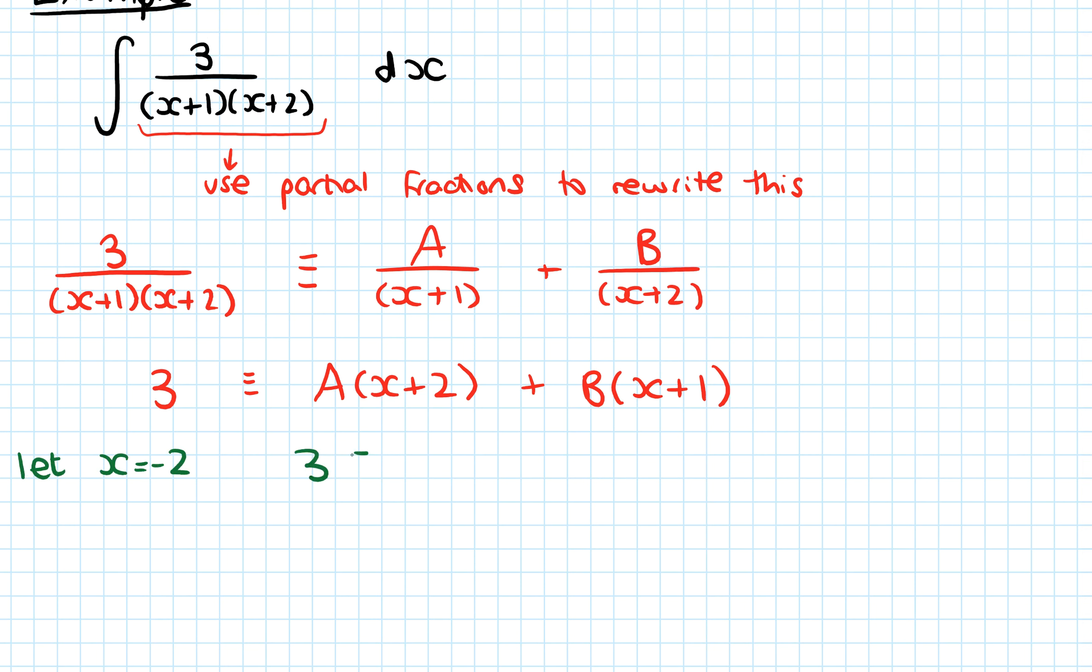So 3 would stay the same. If x was minus 2, the x in this first bracket would be minus 2 plus 2. That's 0 A's. So minus 2 plus 1 is minus 1. So that equals minus B. And that will give us that B equals minus 3 at that point.